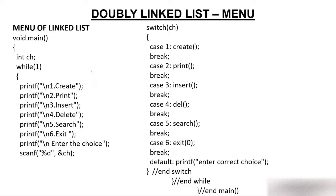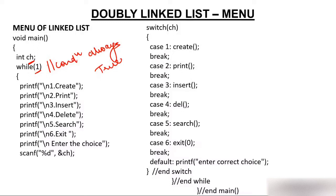I have already discussed the menu many times. In function main, we have created an integer variable and then while(1). While(1) means this while condition is always true. Because if you put anything inside while which is other than 0 — 100, 200, 1, 2, 3, minus 100 — it will always be true.